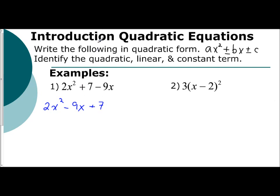So now we're going to identify all of the parts. Our quadratic term is 2x², our linear term is -9x, and our constant is positive 7.